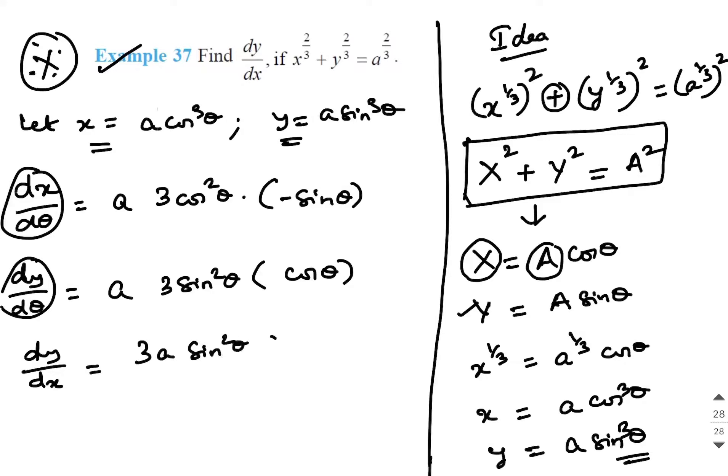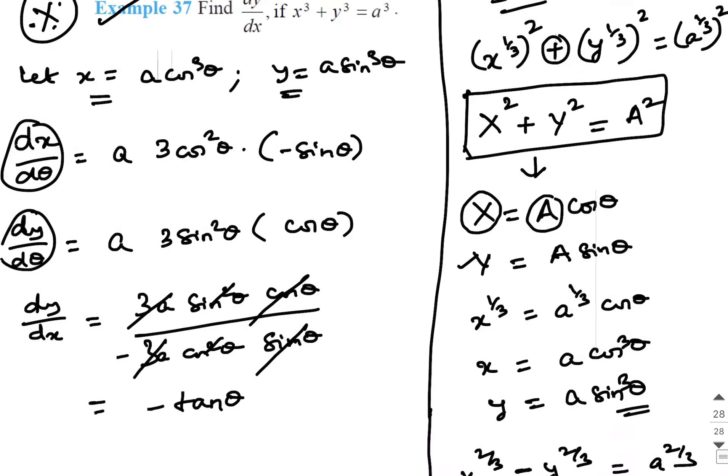So, 3A sin square theta cos theta divided by 3A cos square theta into minus sin theta. I have taken the minus outside. 3A, 3A gets cancelled. One sin is gone and one cos is gone. So, the answer will be minus tan theta.